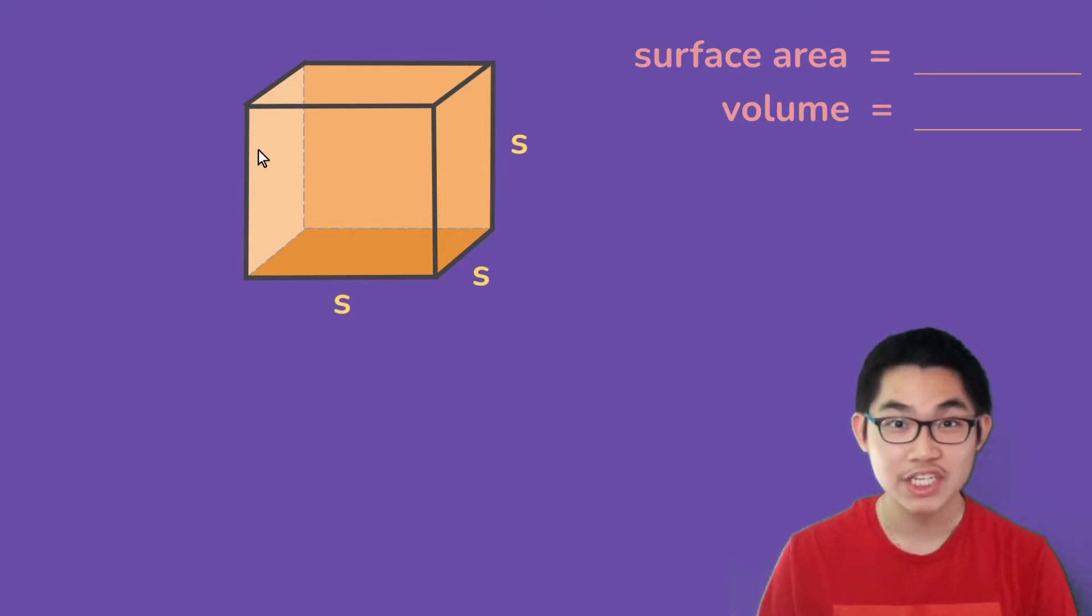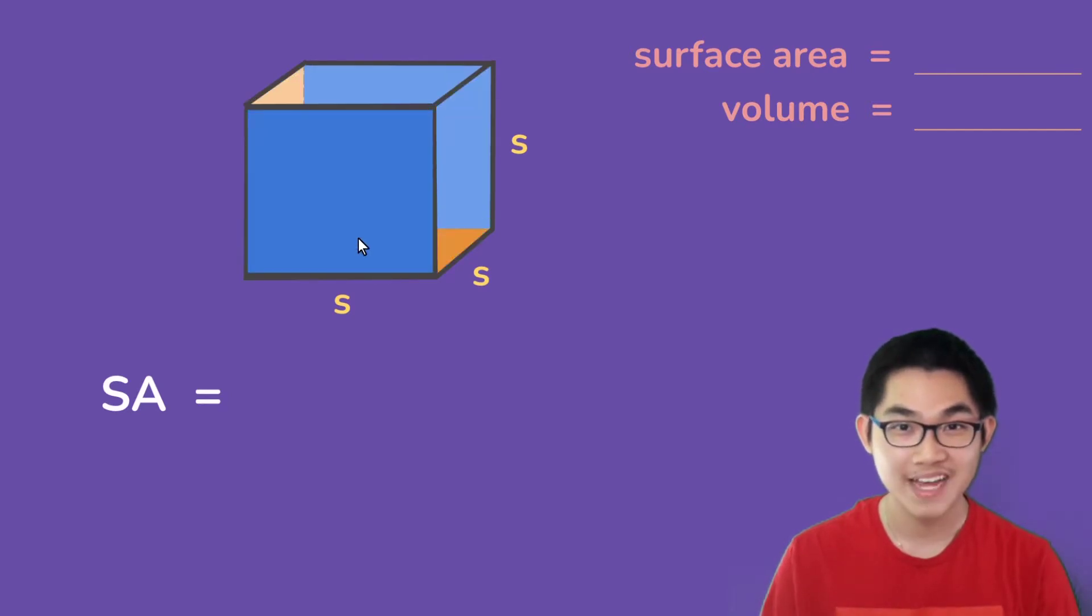Now to calculate the surface area of a cube, we need to count all of the sides of a cube and then find the total area. So how many sides are there in a cube? Well, there is one, two, three, four, five, and six. There are six squares in a cube.